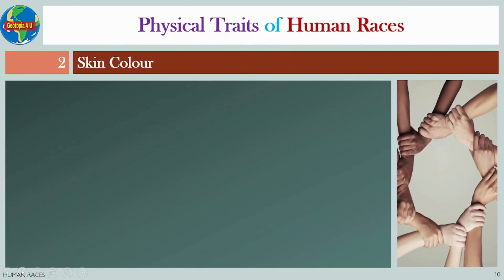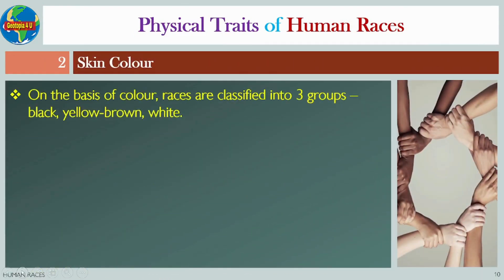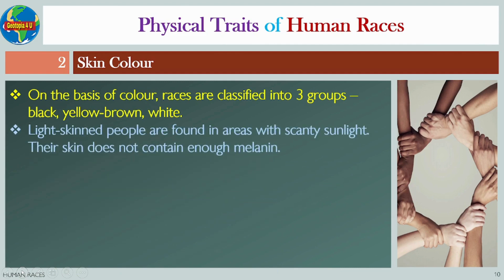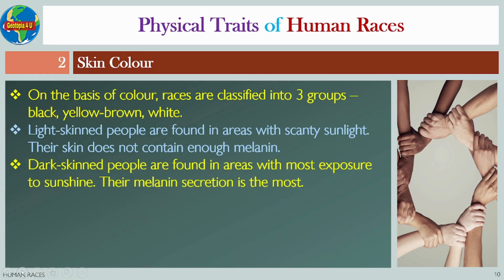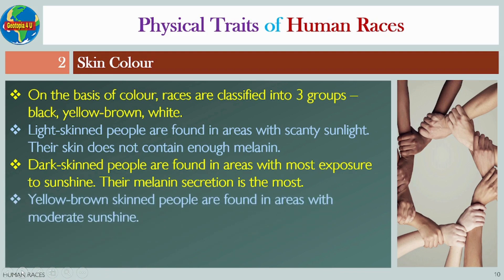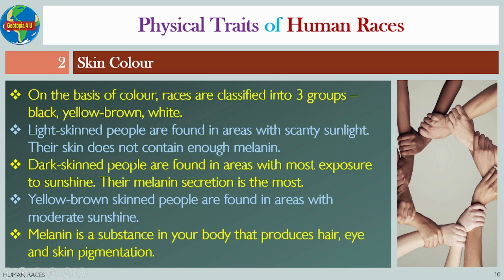Number two: Skin color. On the basis of color, races are classified into three groups: black, yellowish-brown, and white. Light-skinned people are found in areas with scanty sunlight, as the skin does not contain enough melanin. Dark-skinned people are found in areas with most exposure to sunshine, where melanin secretion is the most. Yellowish-brown skinned people are found in areas with moderate sunshine. Melanin is the substance in our bodies that produces hair, eye, and skin pigmentation.